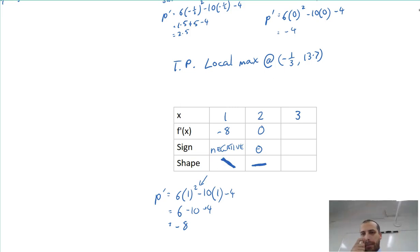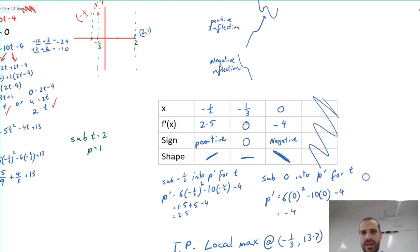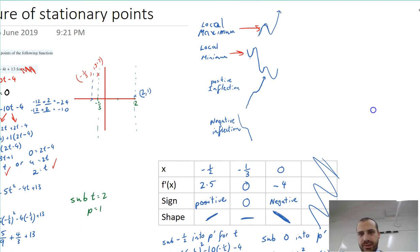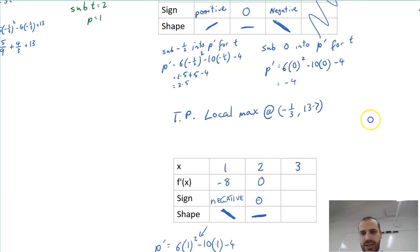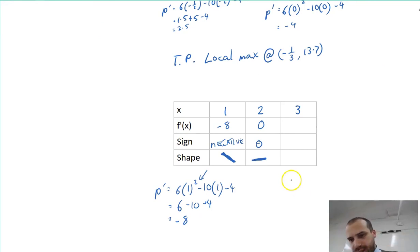At this point, we've sort of narrowed it down. It's definitely not going to be a maximum. It could be either a local minimum or it could be like a negative inflection. Let's find out which one it is by subbing in 3.